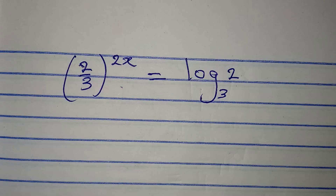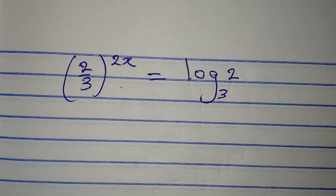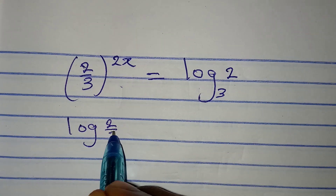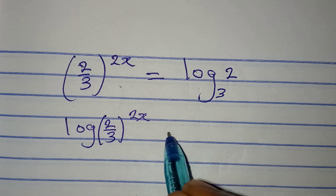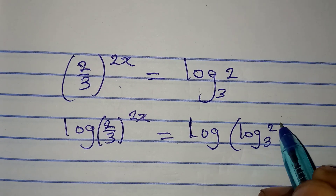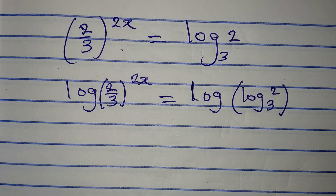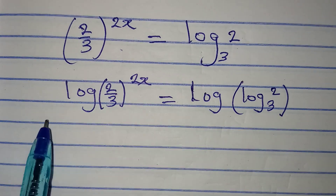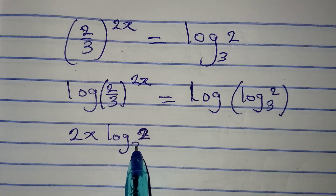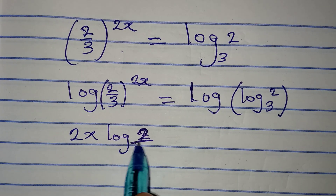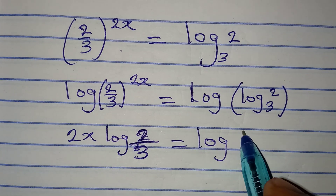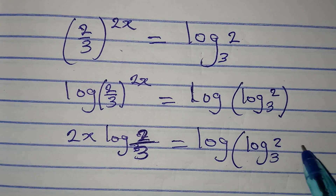From here, the next thing I will do is take the log of both sides again. So I'm going to have log of (2 over 3) to the power of 2x, equal to log of [log 2 to base 3]. The power goes behind, so I have 2x times log(2 over 3) equal to log of [log 2 to base 3].